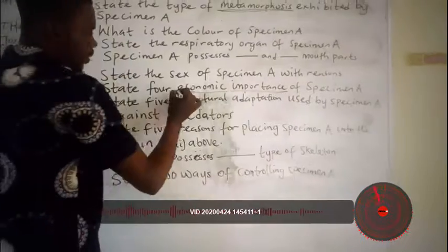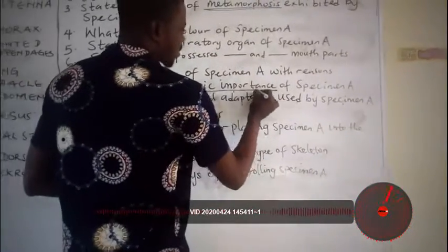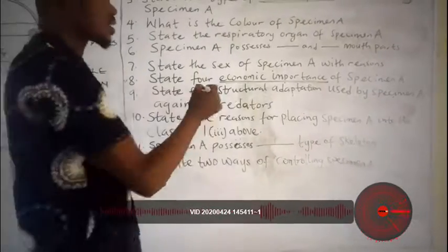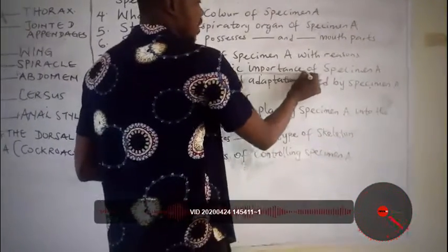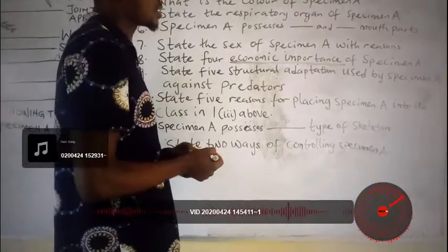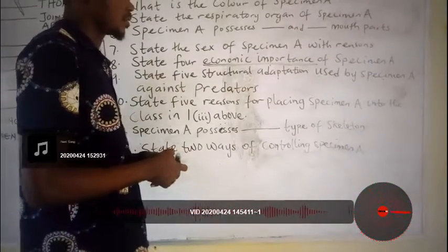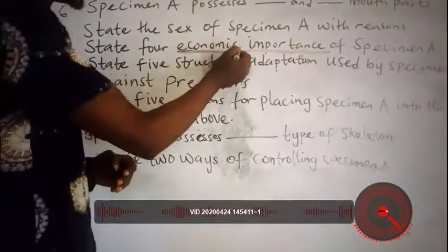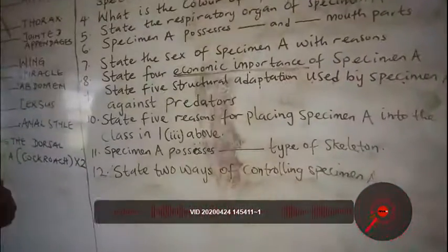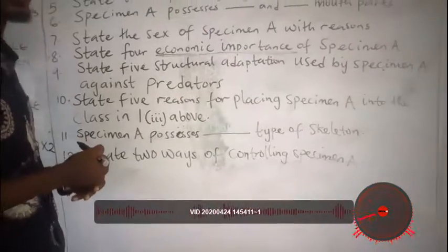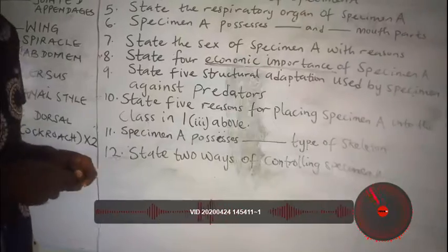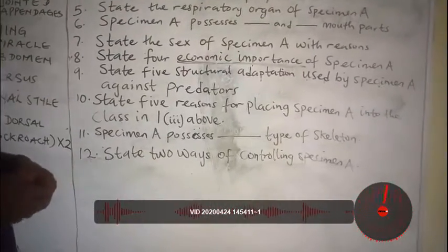Question eight states: give the economic importance of specimen A. When asked to state the economic importance of a specimen, you should state both the advantages and disadvantages of the specimen, because a disadvantage to other animals may be an advantage to the specimen itself or other processes. We are looking at the economic importance of specimen A, which is the cockroach.